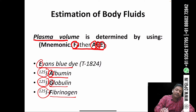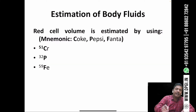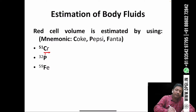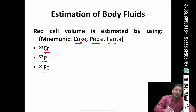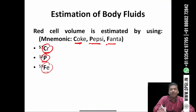The red cell volume is estimated using chromium-51, phosphorus-32, and iron-59. A mnemonic to remember this is 'Coke, Pepsi, and Fanta': C for chromium, P for phosphorus, and F for iron. If you know both the red cell volume and the plasma volume, you can also estimate the total blood volume.